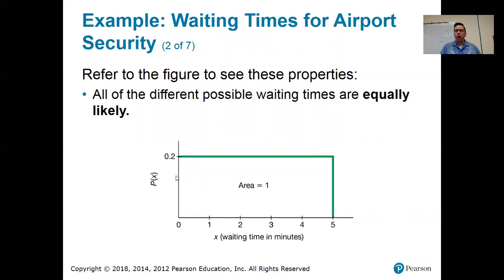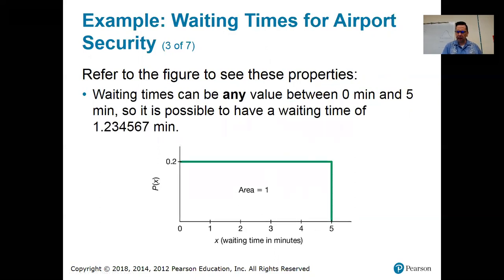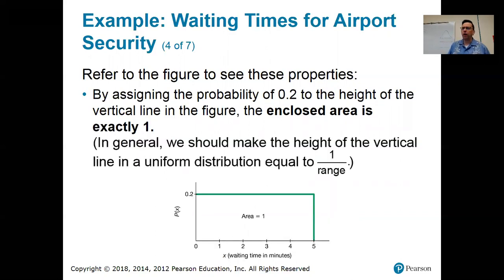Now, where did this 0.2 come from? That's what I really need to explain to you. And I think that might be on the next slide. Oh, okay. So this is just what I said a second ago. Any value is possible between zero and five.